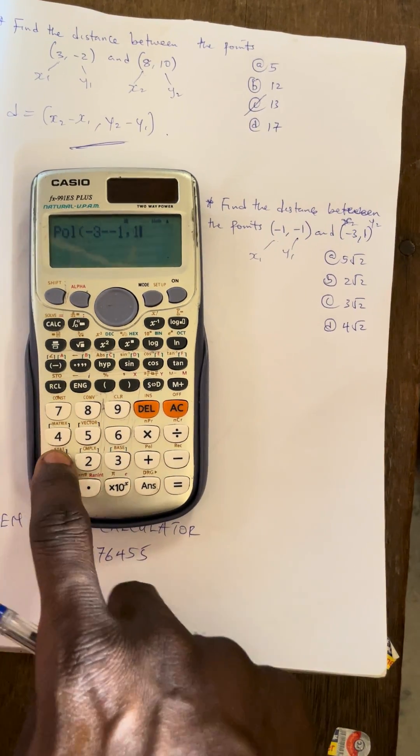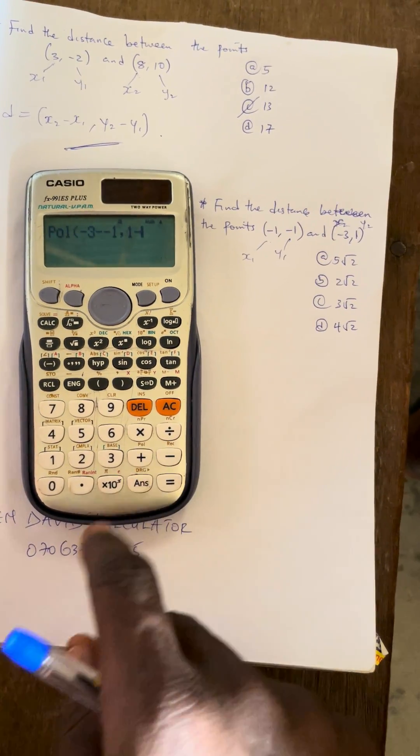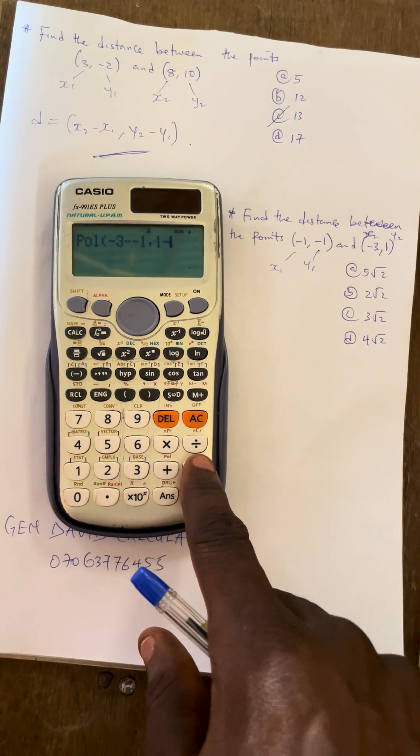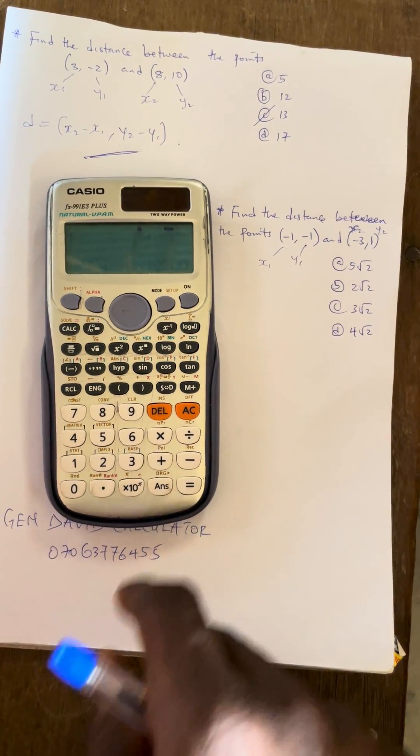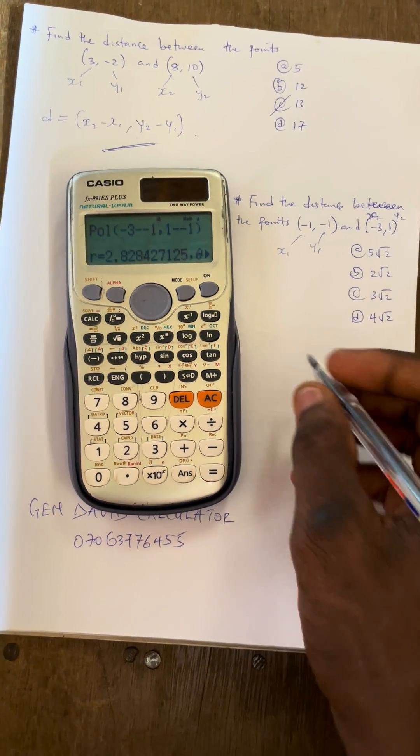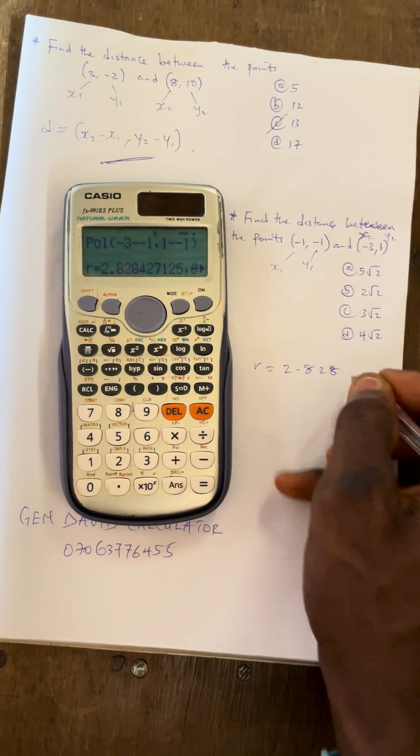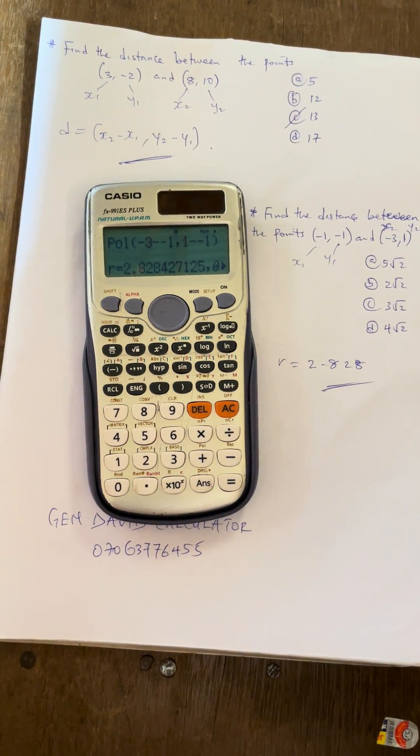Then your y2, which is 1, minus, what's our y1? Our y1 here is minus 1. So press minus 1, then close the bracket. When press equals 2, you observe that the answer here for the distance is equal to 2.828. 2.828 is our answer.